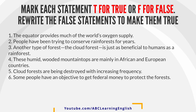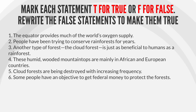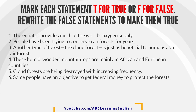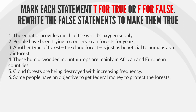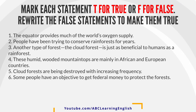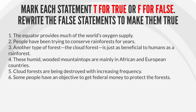1. The equator provides much of the world's oxygen supply. 2. People have been trying to conserve rainforests for years. 3. Another type of forest, the cloud forest, is just as beneficial to humans as a rainforest. 4. These humid, wooded mountaintops are mainly in African and European countries. 5. Cloud forests are being destroyed with increasing frequency. 6. Some people have an objective to get federal money to protect the forests.